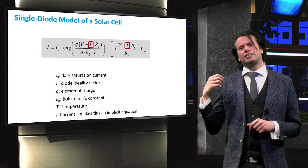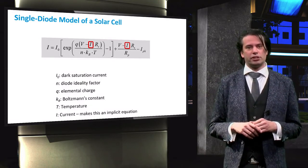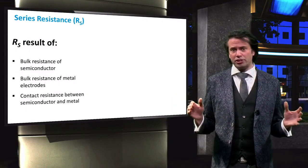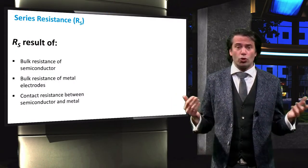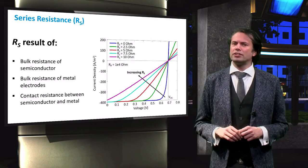So let's take a look at how these curves can be changed due to these resistances. First, let's examine the series resistance, RS. RS is caused by bulk resistances of the semiconductor materials and the metal electrodes. The contact resistance between the semiconductor and the metal also influences RS.